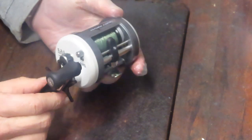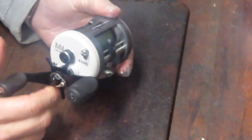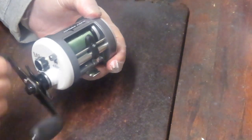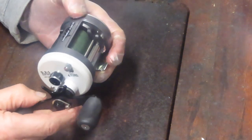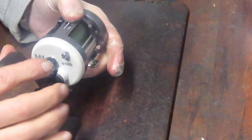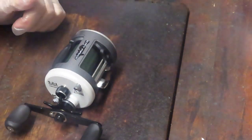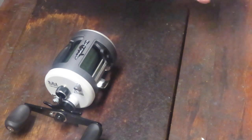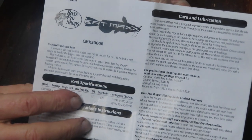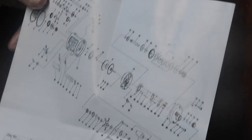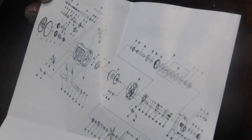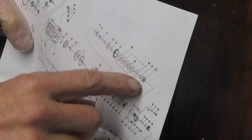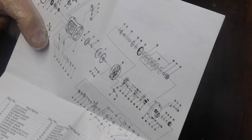This one came in from Andrew in Maryland and he said he self-serviced it. Seems like he did a nice job. But what he said was it appears that the drag washers need to be tightened down pretty far before they're grabbing. So this is probably going to be more of an inside look rather than a service.